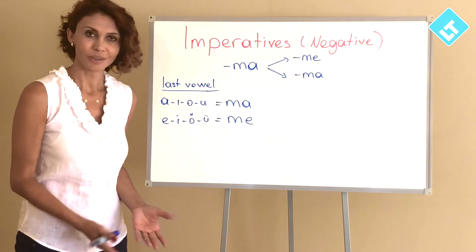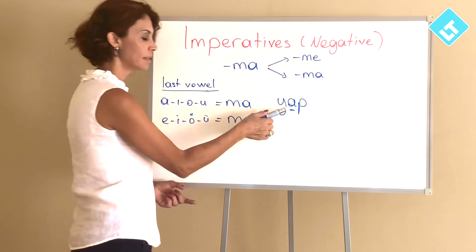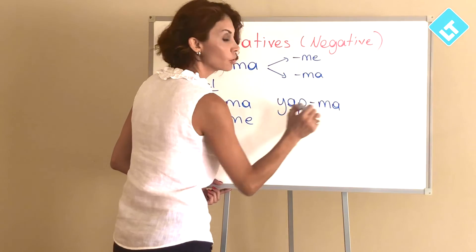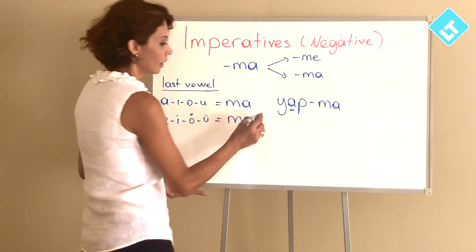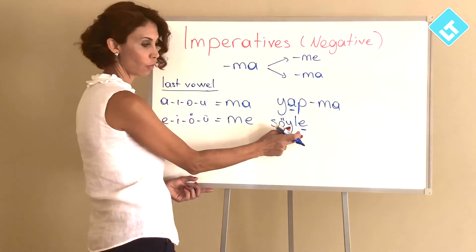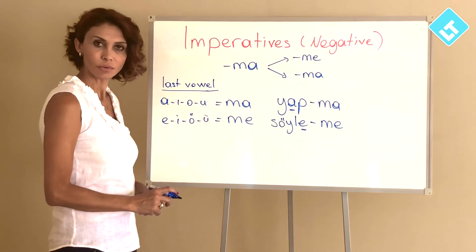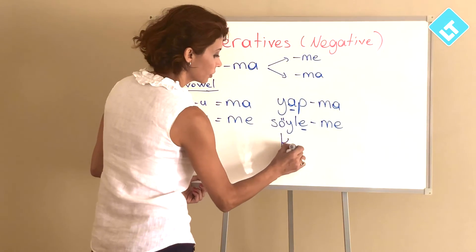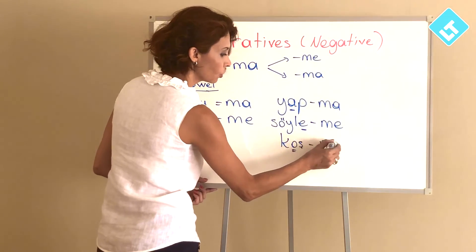So how can you say don't do? Don't do is yap. Yap has a back vowel. I need to use -ma suffix to say don't: yapma. Don't tell is söyle. Söyle is ending with a front vowel. I need to add -me suffix: söyleme. Don't tell. Or don't run: koş. Koş has a back vowel: koşma.